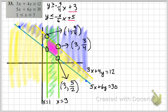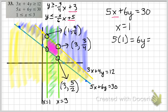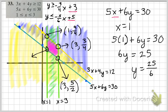And then for this last point, I'm working with the equations 5x plus 6y equals 30. So I'm going to plug in my x value to find my y. So 6y equals 25, which means y equals 25 sixths. So this coordinate point is 1, 25 sixths. So there are your four coordinate points. So you have your four vertices in your shaded area. And you are good to go.